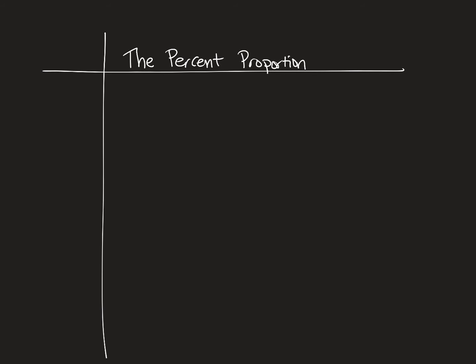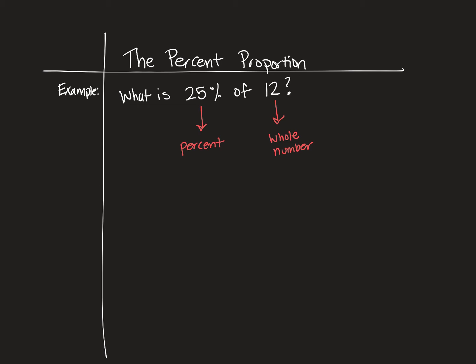When we have a percentage problem, we usually have either a percentage, a whole number, or part of a whole number that's given to us or asked of us. For example, let's say you're given: what is 25% of 12? Well, we're given a percentage and we're given the whole number. What's missing is the part — that's what they actually want you to find. What part of 12 is 25%? In other words, what is 25% of 12?